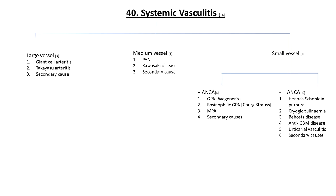Systemic vasculitis refers to a group of named primary vasculitides that are immune-mediated and individually distinguished by the presence of unique clinical and pathological features. The clinical manifestations are protean — it may be confined to a single organ or affect a wide range of organ systems. Systemic vasculitis should be considered when a particular physical finding or constellation of findings is present, or when multiple systems are involved.